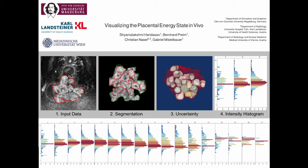Highly active regions of the human placenta contain cotyledons, units that support the fetus with nutrition. In case of their failure, the fetus gets deprived of sufficient nutritious support. This could lead to placental inter-uterine growth restriction.